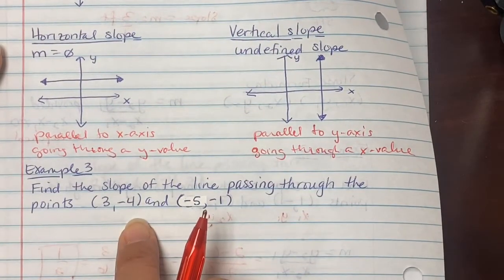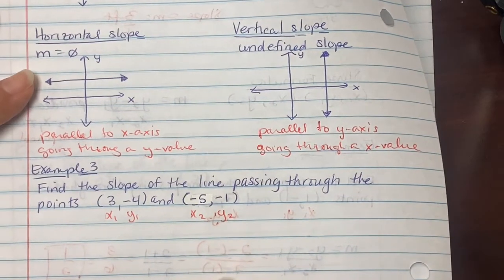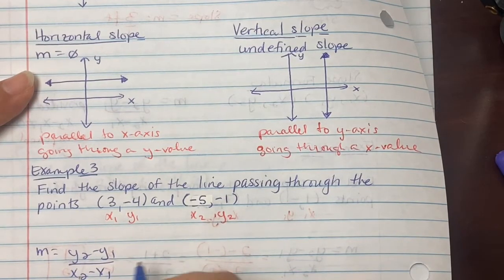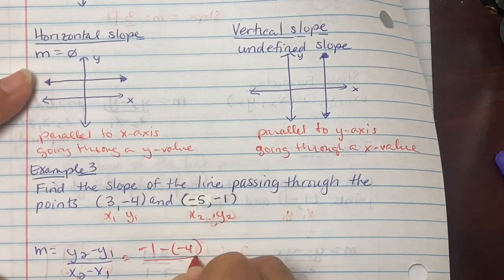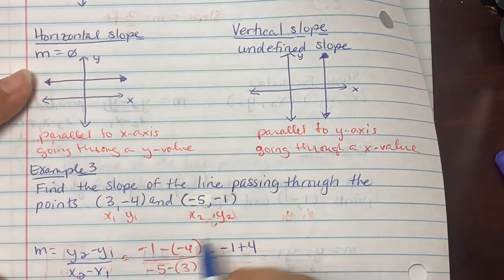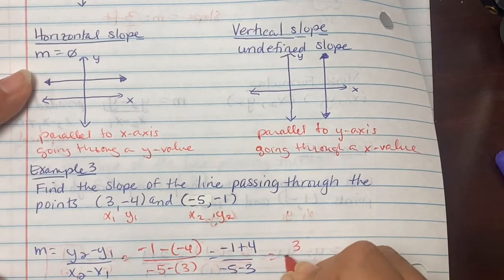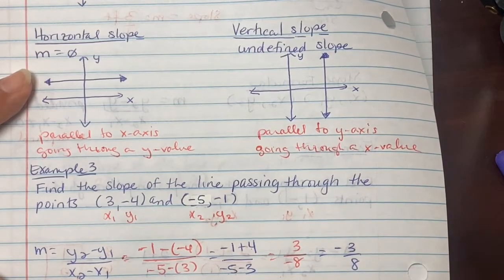Example 3: find the slope of the line passing through the points (3, -4) and (-5, -1). Label them x₁ y₁ and x₂ y₂. m equals y₂ minus y₁ over x₂ minus x₁. We get negative 1 minus (-4) over negative 5 minus 3. The minus-minus becomes addition: negative 1 plus 4 gives positive 3, and negative 5 minus 3 is negative 8. So the slope is negative 3 over 8, which means we have a negative slope.